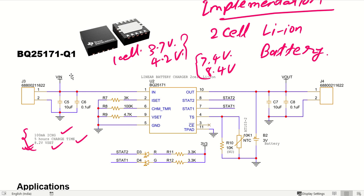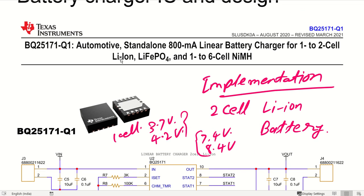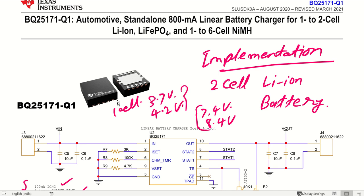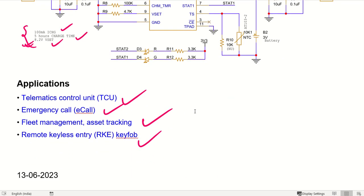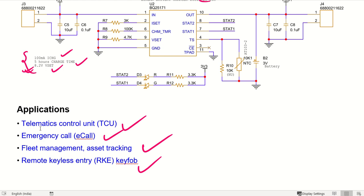The reason we are stressing on this particular IC is because it is a very good IC. It is applicable for three kinds of battery chemistries, and as a linear battery charger, it is a very low cost design solution. The best part is it can be used in many applications like telematics control units, emergency call systems, fleet management, asset tracking, remote keyless entry, and many more.